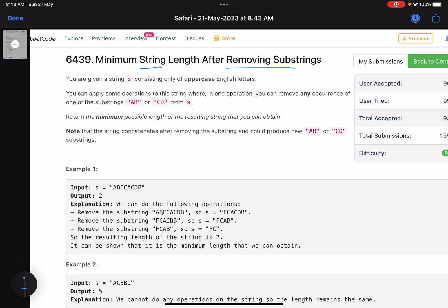You are given a string s consisting only of uppercase English letters. You can apply some operations to this string where in one operation you can remove any occurrence of one of the substrings, so it can be either AB or CD. Now return the minimum possible length of the resulting string that you can obtain.